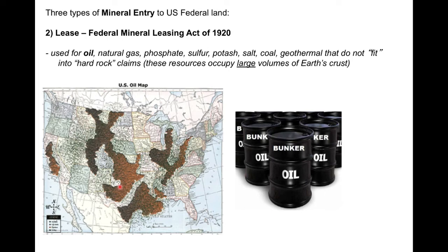Now let's talk about the second law enacted in the United States to control access for extraction of natural resources. In 1920, the United States Congress signed into law the Federal Mineral Leasing Act of 1920. Different from hard rock natural resources such as lode or vein claims or placer claims, the Federal Mineral Leasing Act of 1920 is used for resources such as oil, natural gas, phosphate, sulfur, potash, salt, and coal — all of which occupy very large volumes of the Earth's crust.